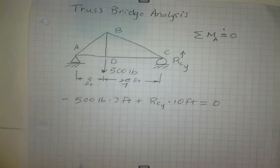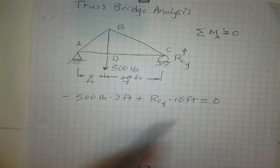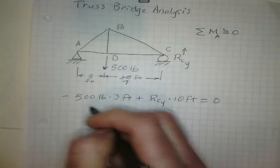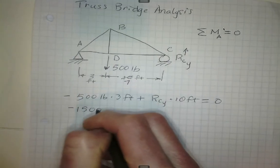Those two moments, excuse me, should add up to zero. So we can solve now for this here. This is negative 1,500 pound-feet.